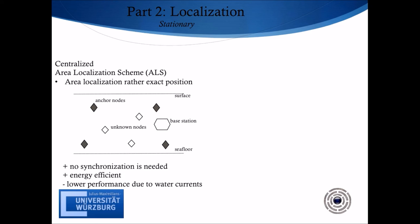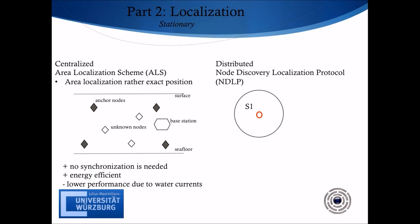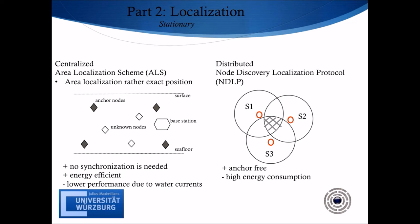Another technique in the same category but in distributed form is called the Node Discovery and Localization Protocol. Starting from a primary node S1, under the assumption that its position is known, this node searches for a second, farthest-away node S2. The reason for selecting the farthest node is to cover large areas more quickly. A third node S3 is then chosen by these two nodes within both communication ranges. Each node can determine its relative location by using simple triangulation in the marked area. This technique is free from any anchor and is used for large-scale applications, but the energy consumption for searching nodes is high.